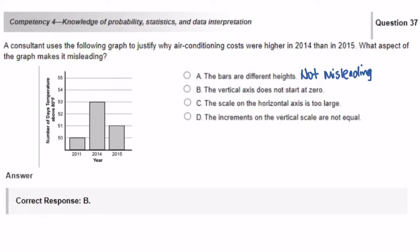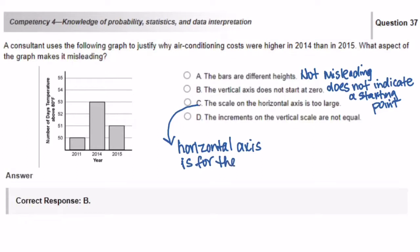Part B says the vertical axis does not start at 0. Well, we don't know where it starts. There's nothing there indicating that it starts at 0. It could start at 5. It could start at 20. We don't know. So that is a bit misleading. Part C says the scale on the horizontal axis is too large. Well, it's measuring the year. So it's just telling you which year and the number of days the temperature was above 80 degrees. So it's not misleading at all.